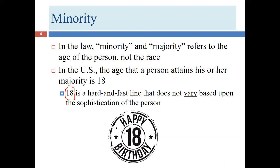Imagine a very sophisticated 17-year-old who has worked for two years, negotiated contracts, done legal research, day-traded, and has checking and savings accounts — more sophisticated than many 25 or 30-year-olds. The law doesn't care. It doesn't remove the disabilities of minority for that sophisticated individual. It's an on/off switch.